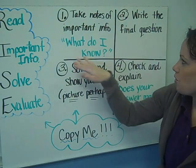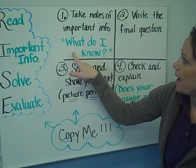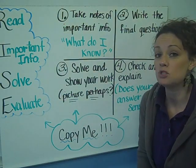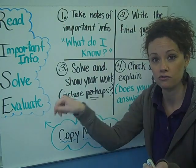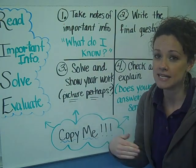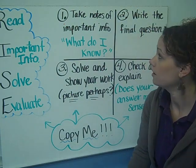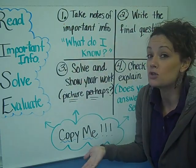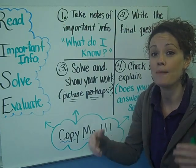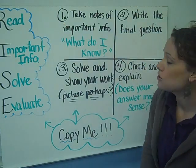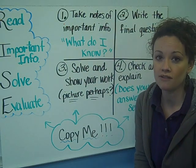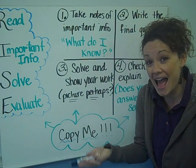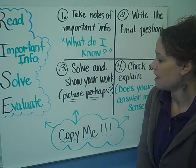The second strategy is a four-square organizer. In box one, take notes of the important information — ask yourself, what do I know? What is the problem telling me? Many times you might not have the problem right in front of you to highlight and underline, so take those notes in your notebook. In box two, write the final question, because especially with multi-step problems, you need to be clear about what the question is actually asking.